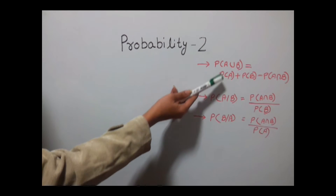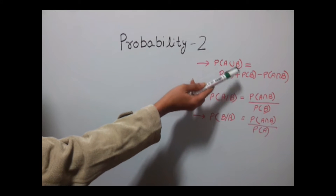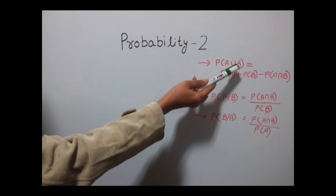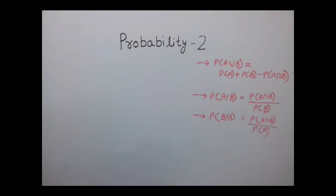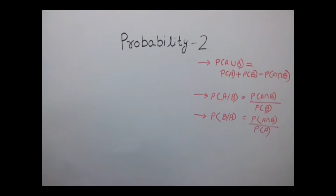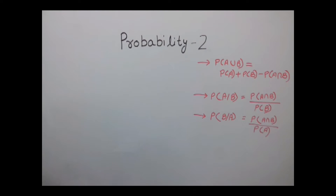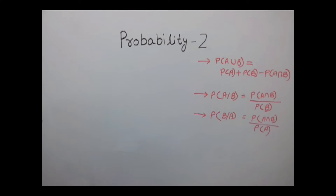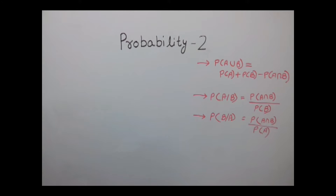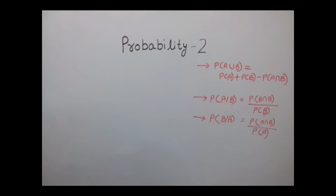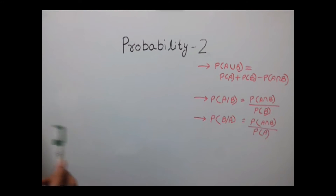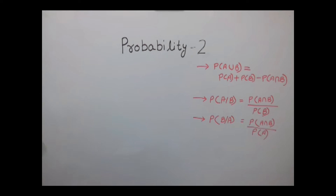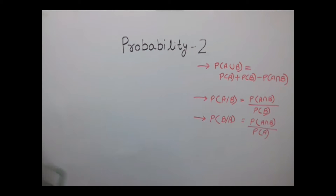We will discuss probability of A and probability of B. Probability of A and B means that both of them occur — first A will occur and then B will occur, or first B will occur and then A will occur. Probability of A or B means either A will occur or B will occur.